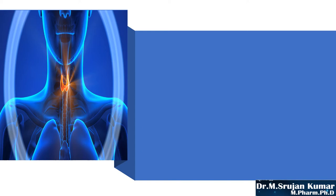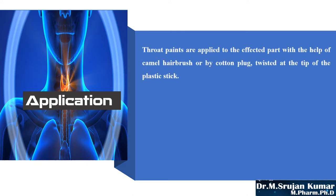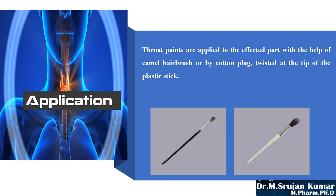That is about the definition of throat paint. Now we have an understanding about what throat paints are. Next, moving on to the application of throat paints — how throat paints are administered. These are applied to the affected part with the help of a camel hairbrush or by cotton pluck twisted at the tip of a plastic stick. Images are displayed showing the applicators — for example, a camel hairbrush. One important point: throat paint should be applied as such without dilution with water.